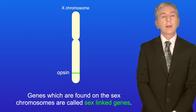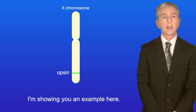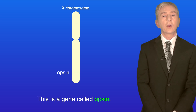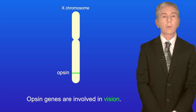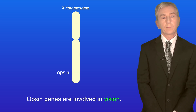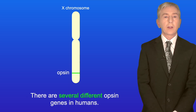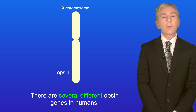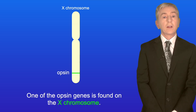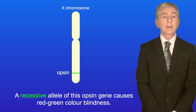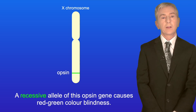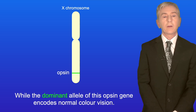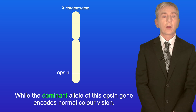Genes which are found on the sex chromosomes are called sex-linked genes. For example, a gene called Opsin — Opsin genes are involved in vision. There are several different Opsin genes in humans. One of the Opsin genes is found on the X chromosome. A recessive allele of this Opsin gene causes red-green colour blindness, while the dominant allele encodes normal colour vision.